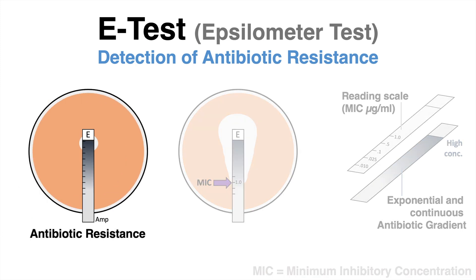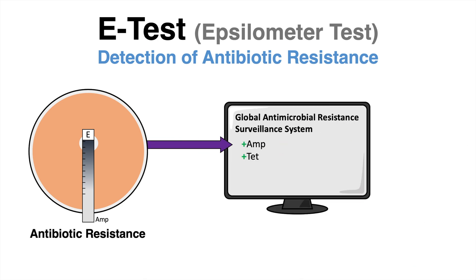If there is no disruption in the bacterial growth around the strip, or the clear area is really small, these bacteria are likely already resistant or a resistance is emerging. Keep in mind, this only applies if the antibiotic used for the test is effective against the respective strain. Did you know that all positive results for antibiotic resistance need to be reported as part of the Global Action Plan on Antimicrobial Resistance by the World Health Organization?